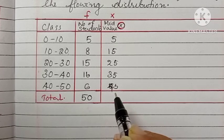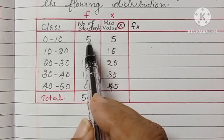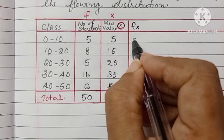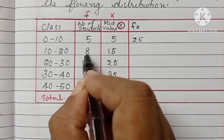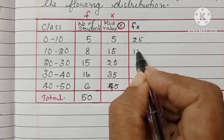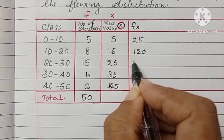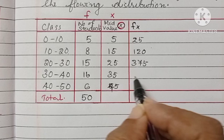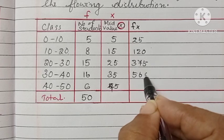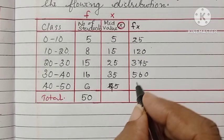After that, we have to find the product of frequency and mid-value x, that means fx. fx is equal to 25, 120, 375, 560, and 270.